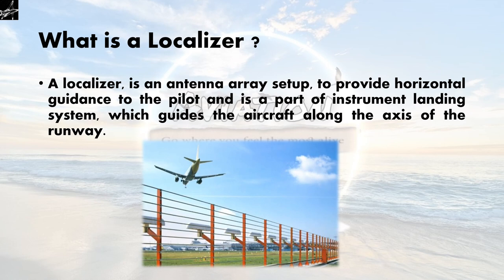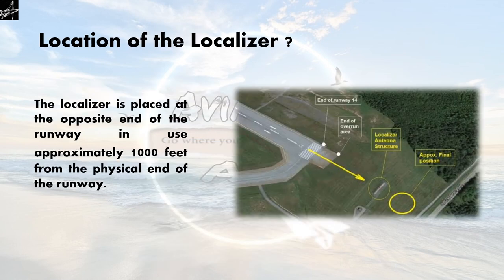Before knowing anything about the critical and the sensitive area, let's understand what is a localizer. A localizer is an antenna array set up to provide horizontal guidance to the pilot and is a part of the instrument landing system, which guides the aircraft along the axis of the runway — meaning it's an instrument used to align the aircraft with the centerline of the runway.